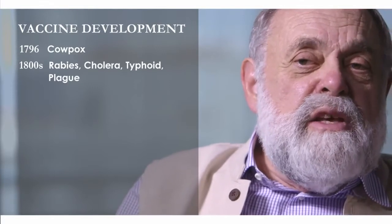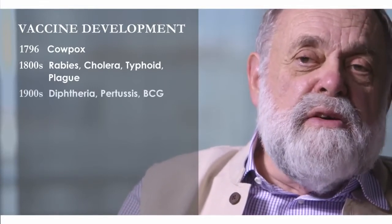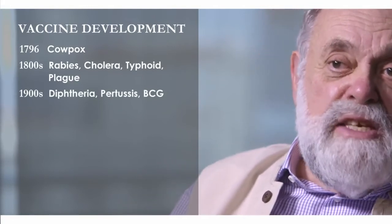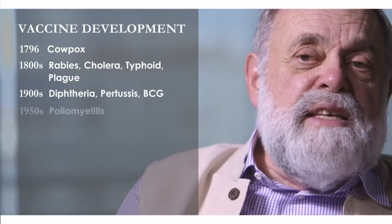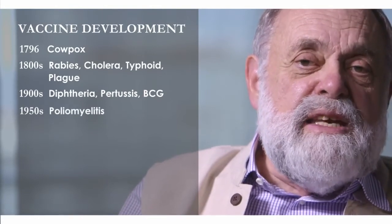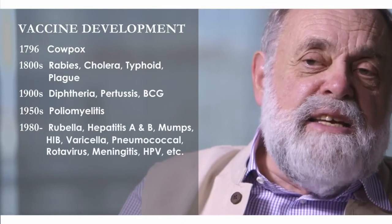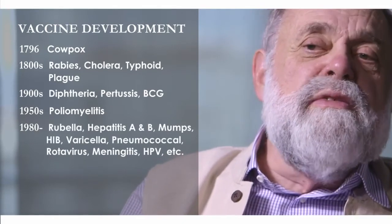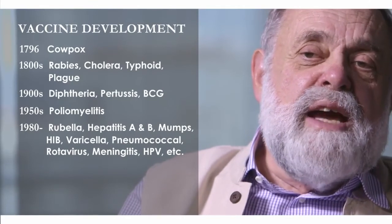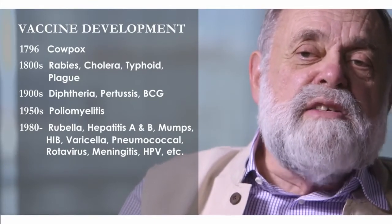Going back to vaccine development, the first was in 1796, where Jenner used cowpox to protect people against smallpox. In the 1800s, we then had the development of rabies, cholera, typhoid, and plague vaccines. The huge increase occurred in the 1900s with diphtheria, pertussis, and BCG for tuberculosis. In the 1950s, we developed poliomyelitis vaccine. And then in the 1980s, 90s, and into the present day, there has been a huge development in vaccines such as hepatitis A and B, pneumococci, rotavirus, and meningitis.